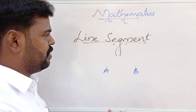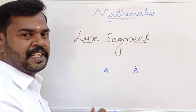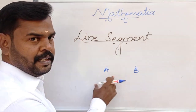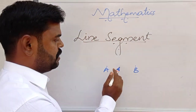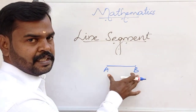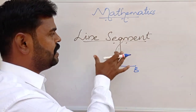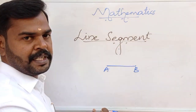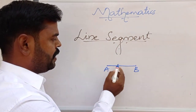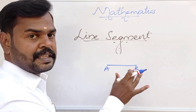Now let us discuss line segment. A line segment is nothing but the joining of two points. Here point A, here point B — joining of two points with a straight line segment. It is a straight, non-curved line. So it is called a line segment. It has two end points and it has finite length.